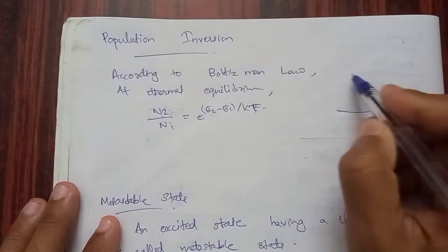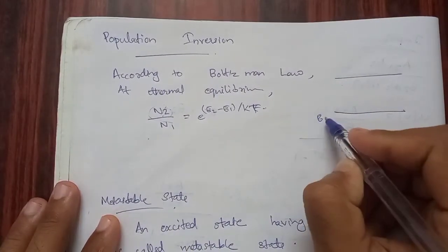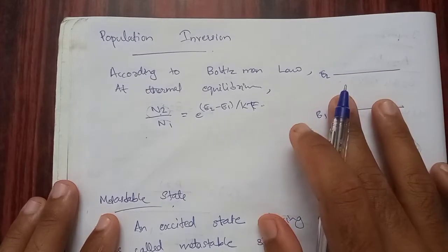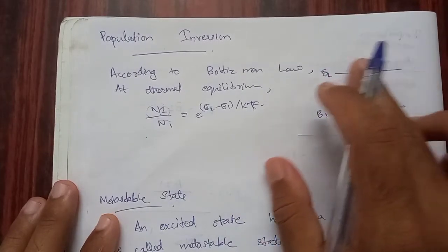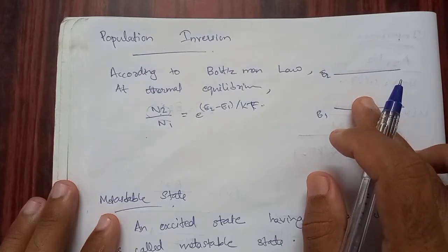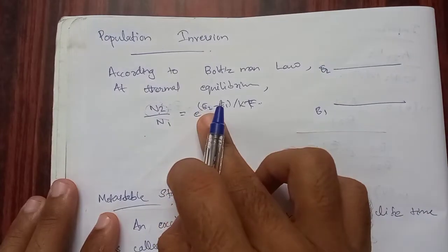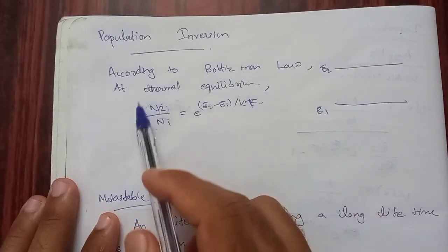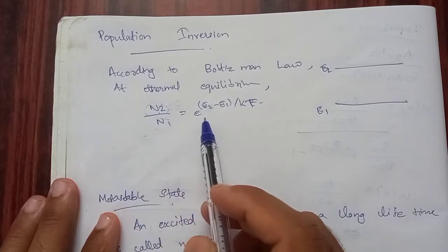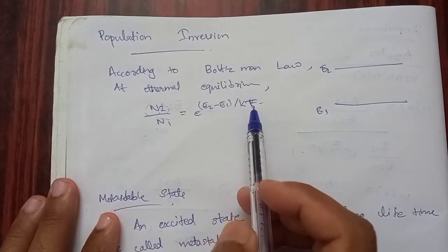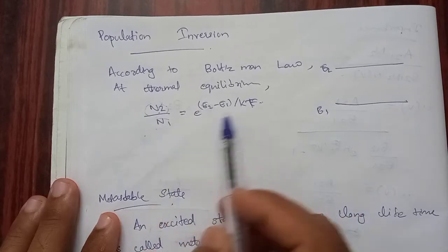This is E1 and E2 — the two energy levels. Population Inversion refers to the condition between E2 and E1. We will learn about the Boltzmann equation: N2 by N1 is equal to e raised to (E2 minus E1) divided by kT, where N1 is the number of atoms in the lower level.